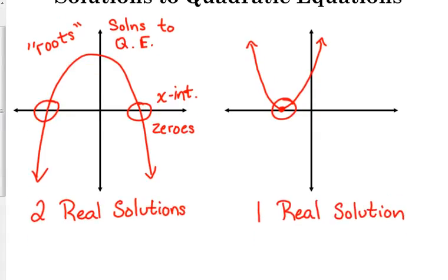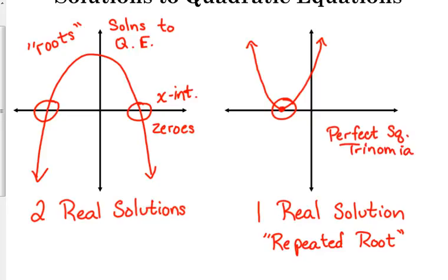That is one real solution. And we call that a repeated root. This is when you have a perfect square trinomial. Remember how those factored? Those were the ones where we got something like (x+4)². So that answer of negative 4 is repeated. Same answer, but we did it twice. This is what it looks like on the graph.